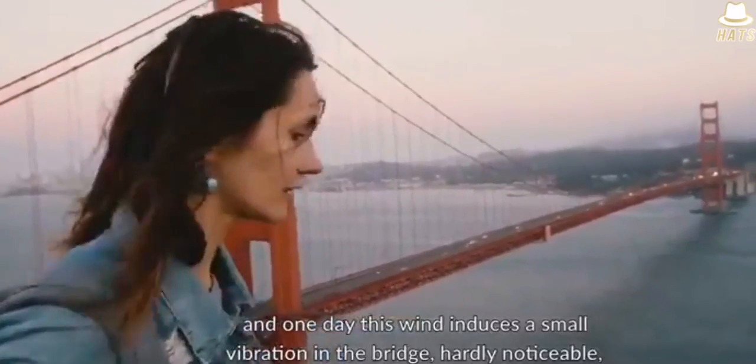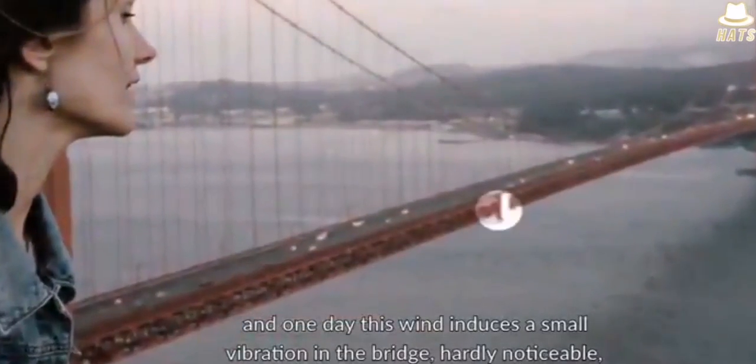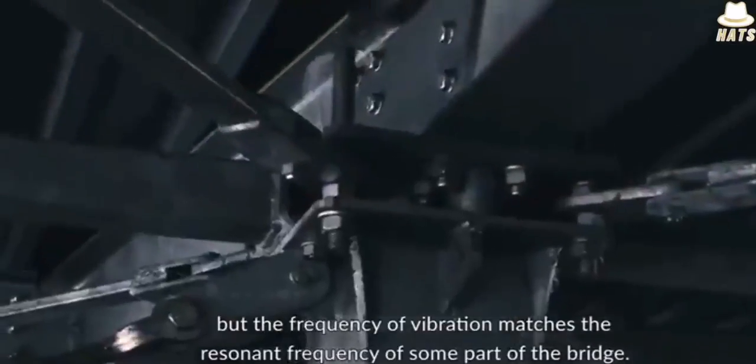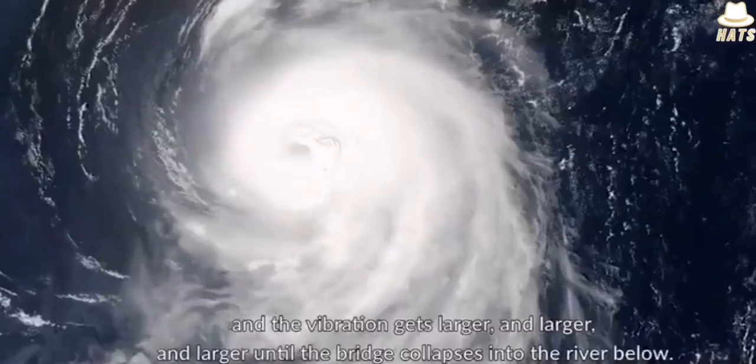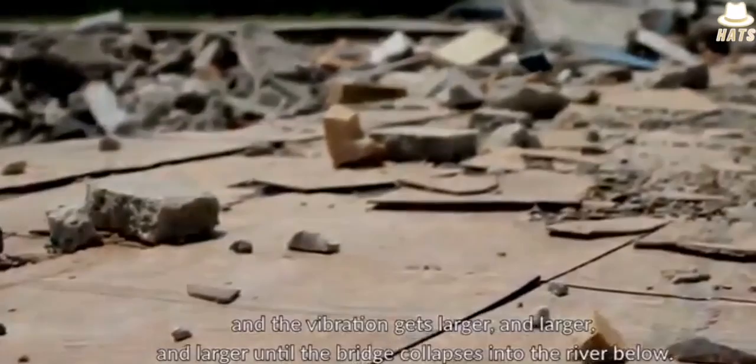Unfortunately, where they built this bridge, there was a steady wind blowing across it. And one day, this wind induces a small vibration in the bridge, hardly noticeable. But the frequency of the vibration matches the resonant frequency of some part of the bridge. And the vibration gets larger and larger and larger until the bridge collapses into the river below. A destructive resonant frequency.